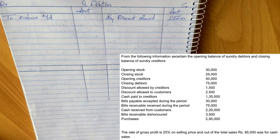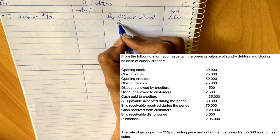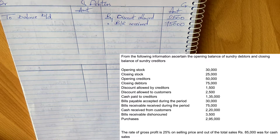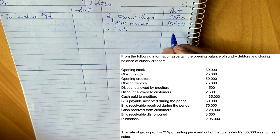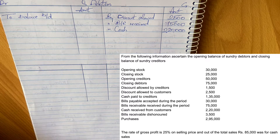Bills payable accepted naturally goes to the credit side, so it doesn't appear in the debtors account. Next, bills receivable received during the period: when we receive bills, we reduce the debtors account and debit bills receivable by an equal amount. So bills receivable received — 75,000 — appears on the credit side of debtors. Now cash receipts from customers: when customers pay cash, it reduces debtors, so we show 'by cash' on the credit side — 2,20,000.